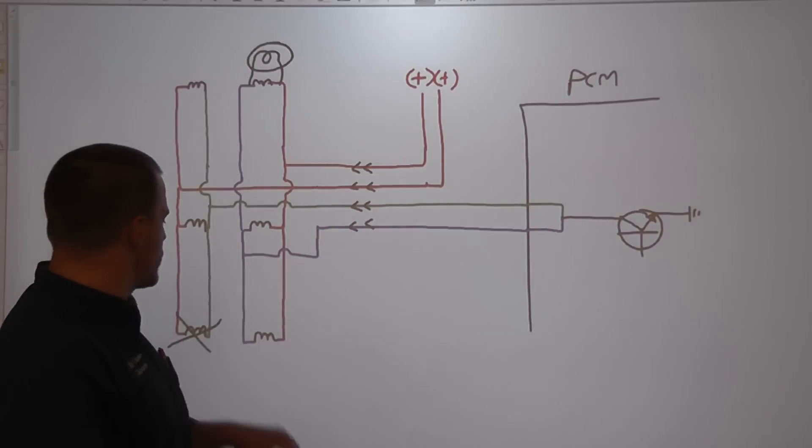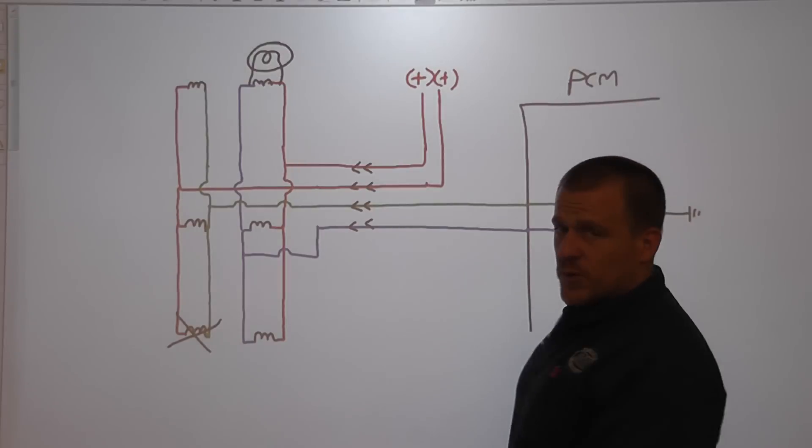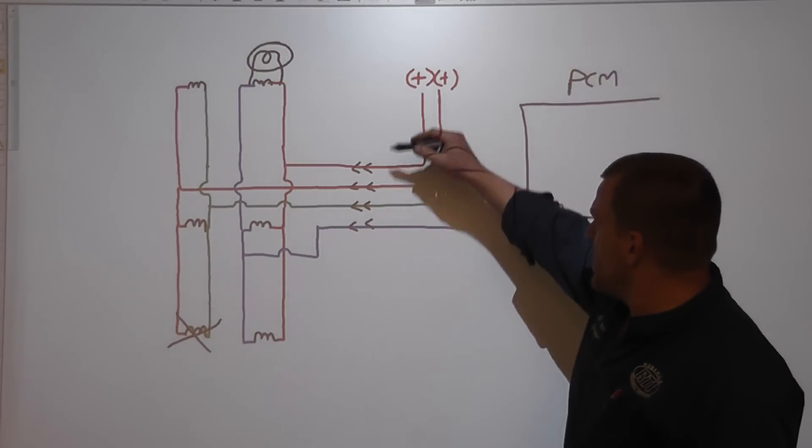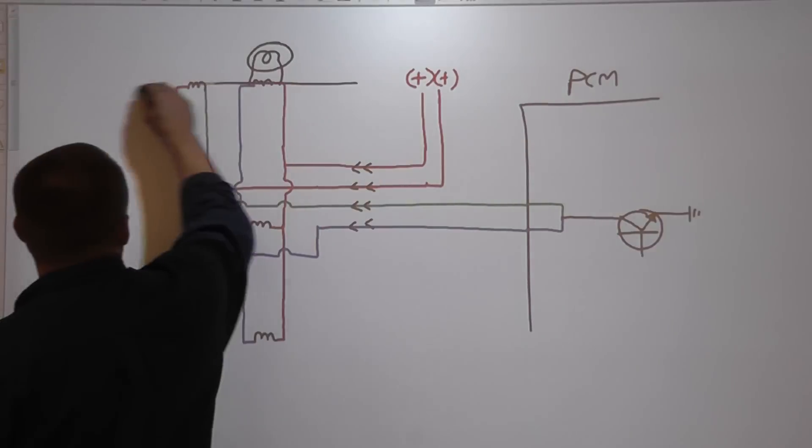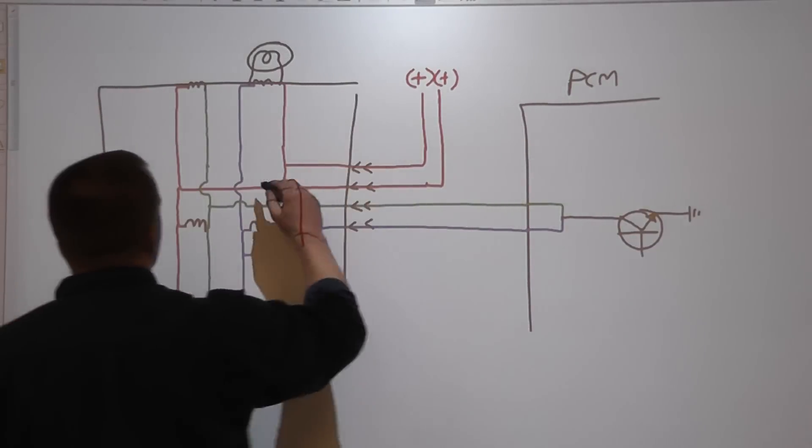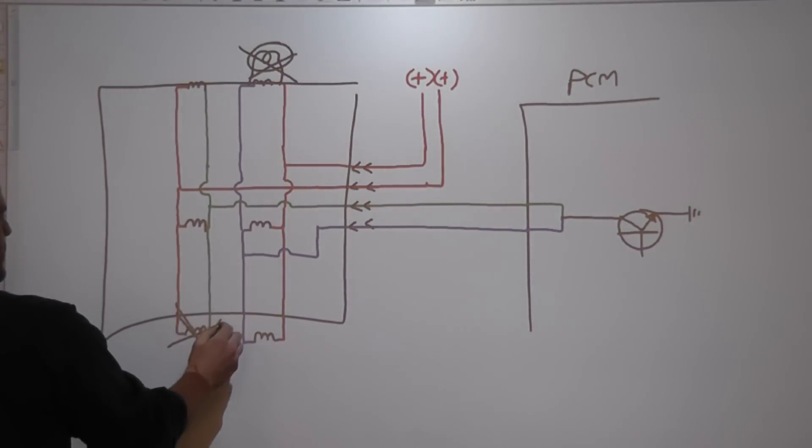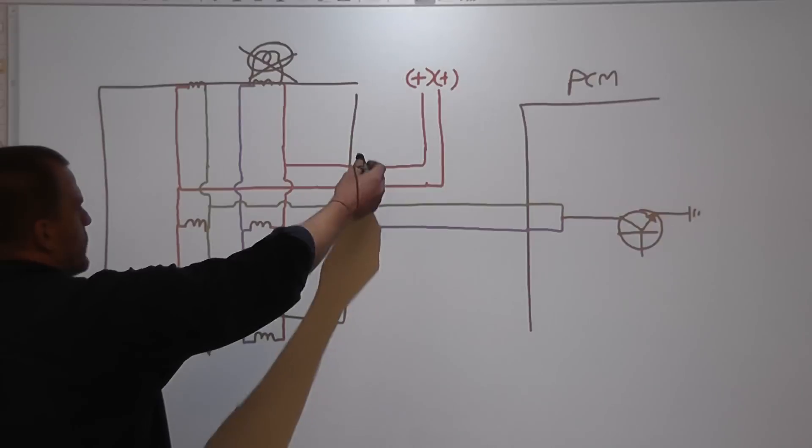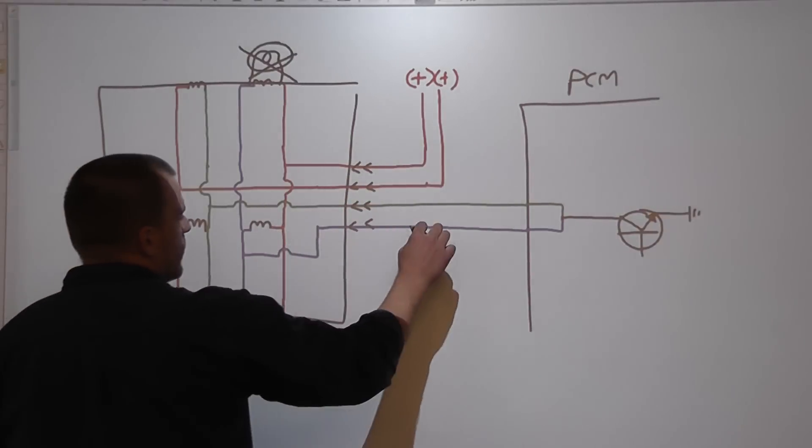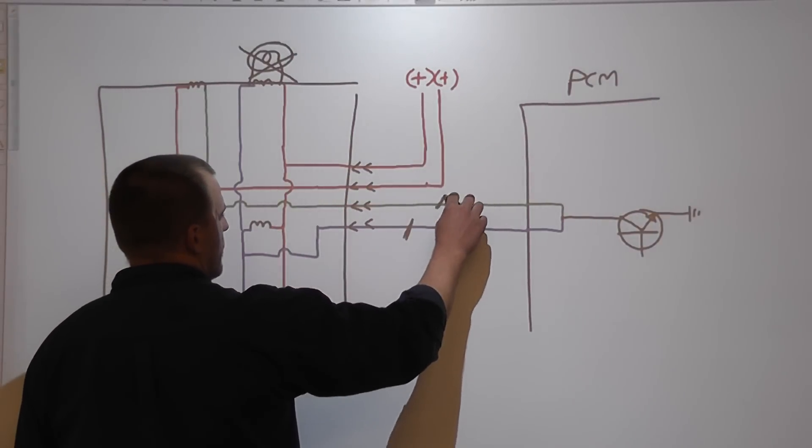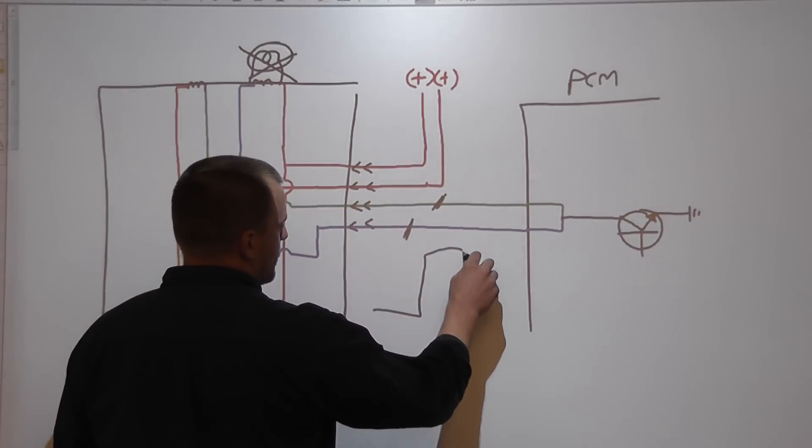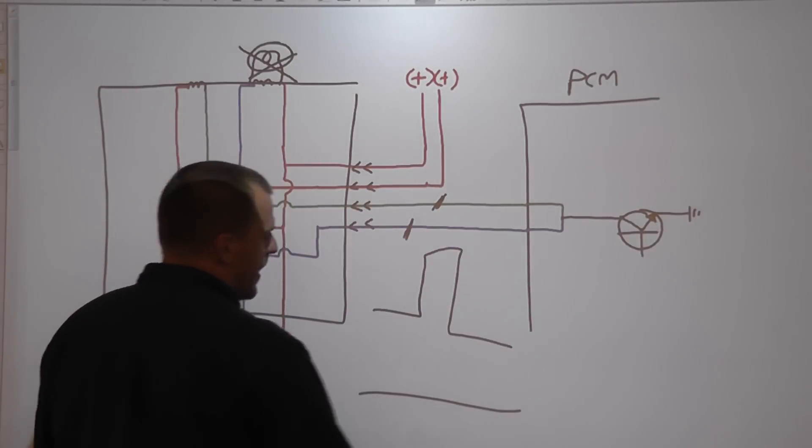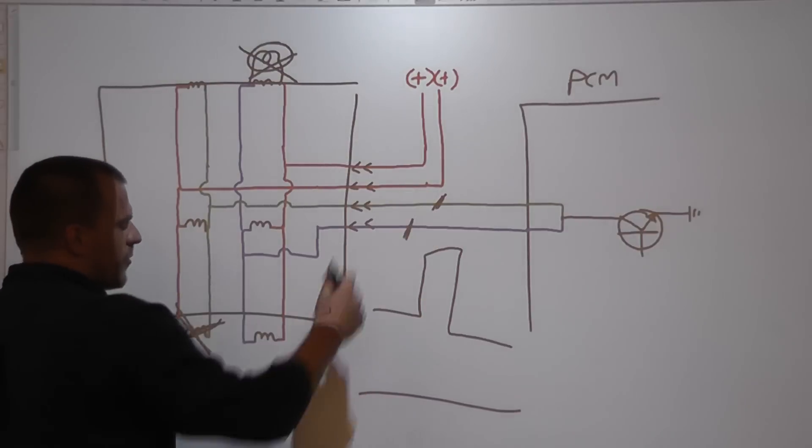So two control wires, one driver inside the computer, typical GM design. This is the connector that we were dealing with right here. The intake manifold basically covers this whole assembly. You can get to this one and you can get to this one, and this is where we were doing our tests. We had an amp probe here and we had an amp probe here, and when we looked at the one bank we had 14 amps of current, and we looked at the other bank and we had zero.